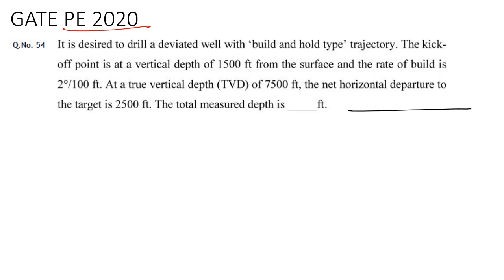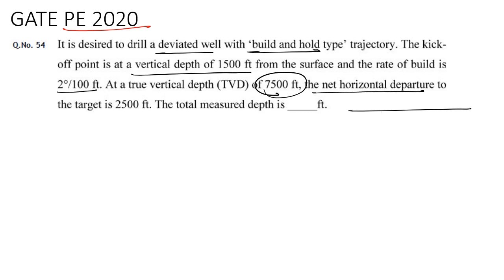It is desired to drill a deviated well with a build and hold type trajectory. The kickoff point is at a vertical depth of 1500 feet from the surface, and the rate of build is given as 2 degrees per 100 feet. At a true vertical depth of 7500 feet, the net horizontal departure to the target is 2500 feet. We need to calculate the total measured depth at the end of the target. So let's draw the schematic.